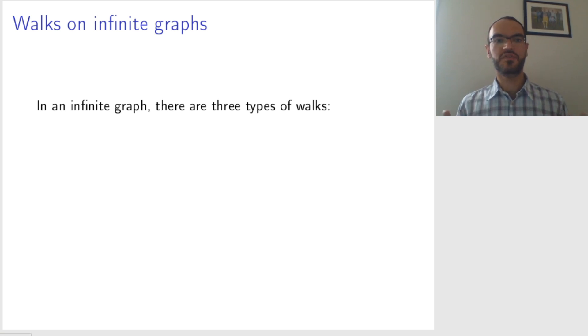So first of all, what do we mean by walk on an infinite graph? Well, since the graph is infinite, we have more room to walk. So there are three types of walks.